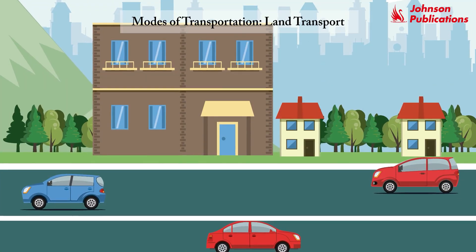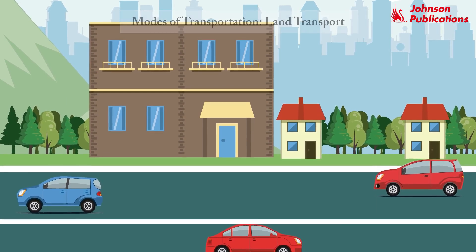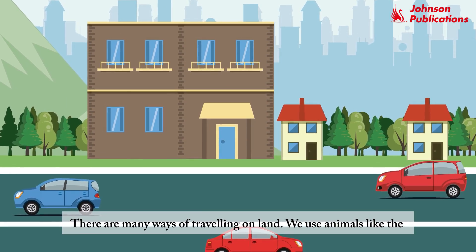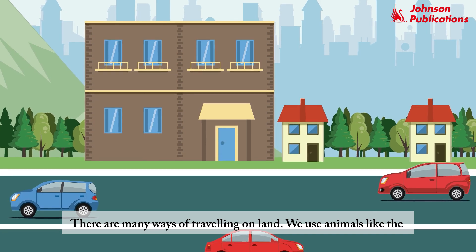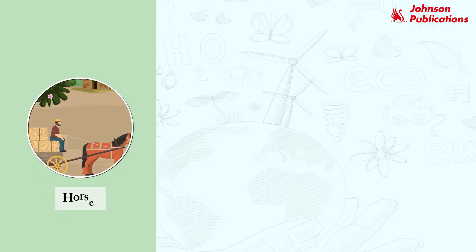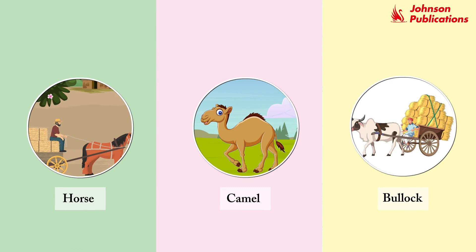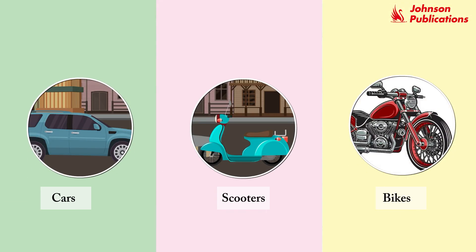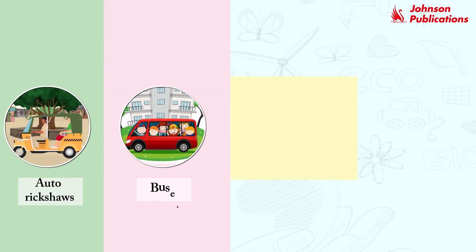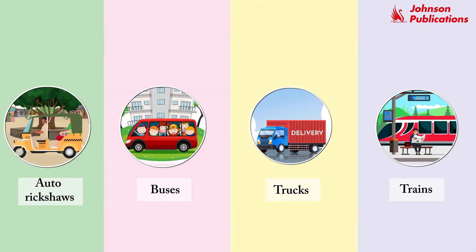Modes of transportation. Land transport: there are many ways of traveling on land. We use animals like the horse, camel, and bullock to drive carts. We also use cars, scooters, bikes, auto rickshaws, buses, trucks, and trains to travel on land.